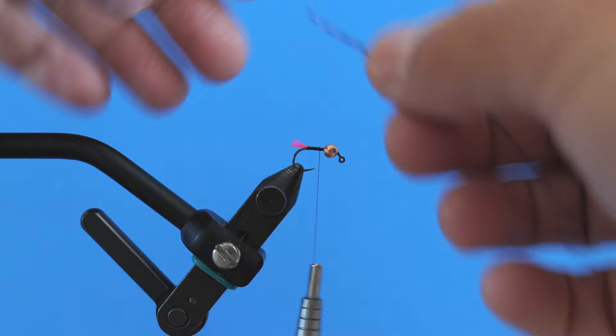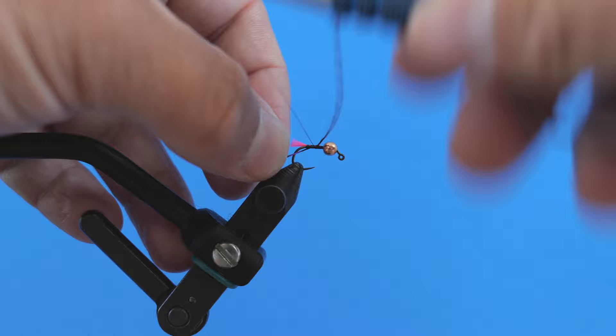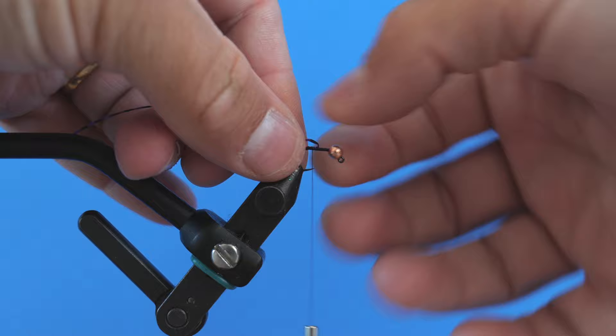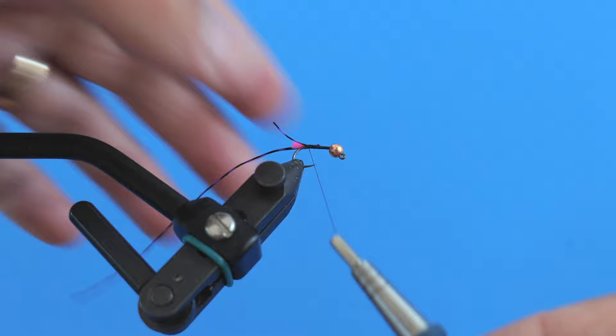So next I'm going to take that barred sexy floss. This is a purple and black here. And I'm just going to capture this on one side of the hook, just like this. Start to wrap back. And then I'm going to pull this over to the opposite side. And I'm going to capture the rest of that sexy floss. So there's a piece on each side of that Glowbrite.